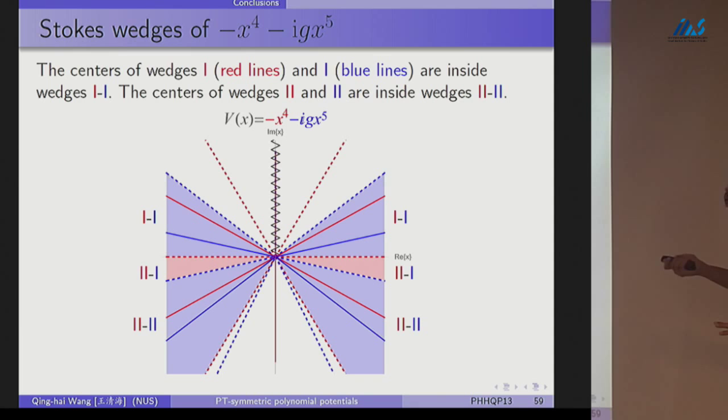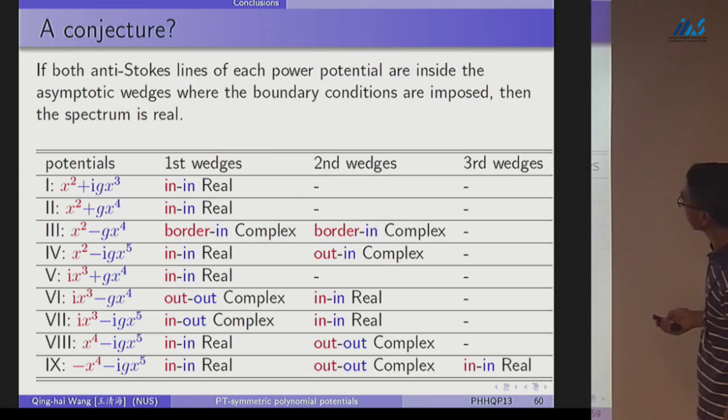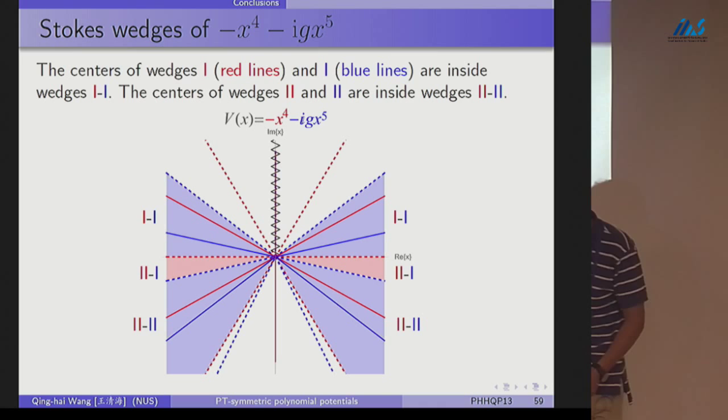And earlier, I showed the top pair has real eigenvalues, no symmetry breaking. The bottom pairs, no symmetry breaking. And the middle ones have symmetry breaking. If we, when I plot this solid line, you can see there's no solid line in the middle. So when these solid lines, the centers of Stokes wedges are inside, that seems to give us some real spectrum. If it's not inside, PT-symmetry breaking. And inside, real spectrum. Now let's see whether that's generic. This is just one of the nine.